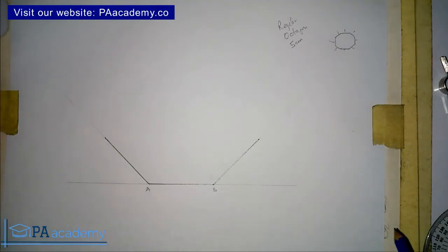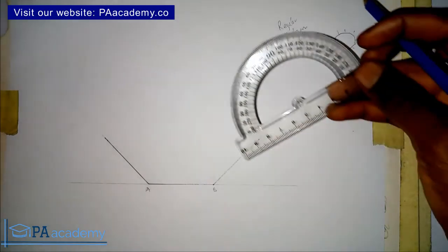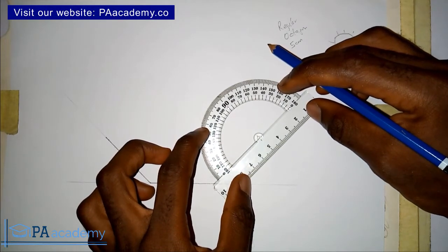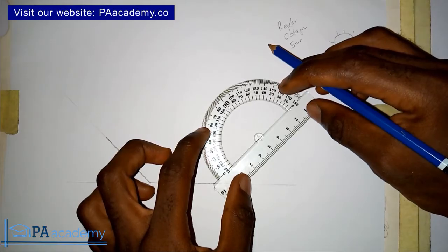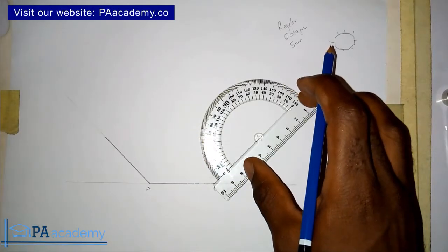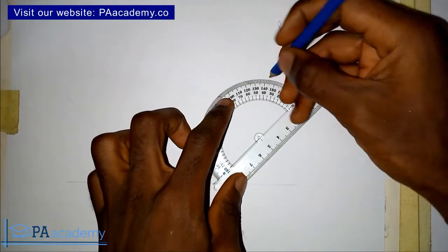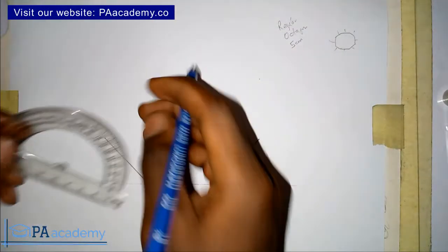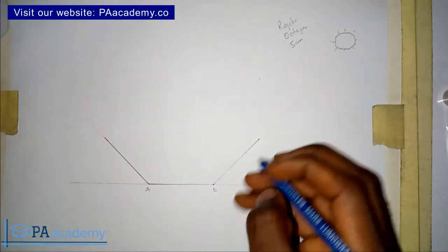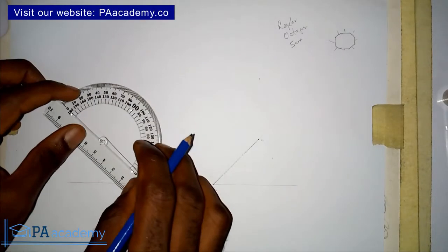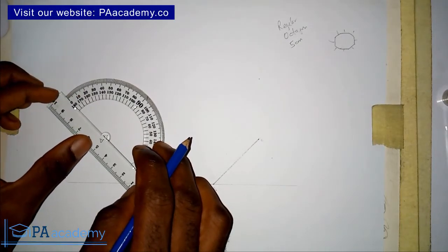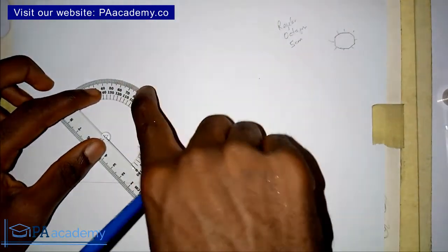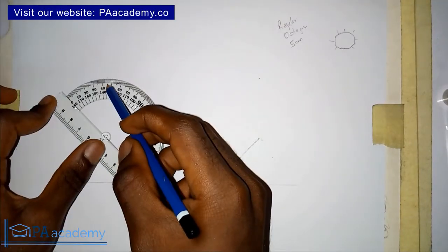Having done that, we'll bring back our protractor and place it on this line. Look for 45 degrees and mark it. Let me call these points: this is point C and this is point D. From point D — that's the end of that 5 cm — you are going to place your protractor and mark 45 degrees in this direction. Notice the direction — this is 45 degrees.